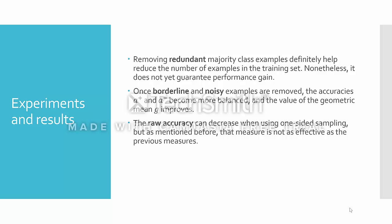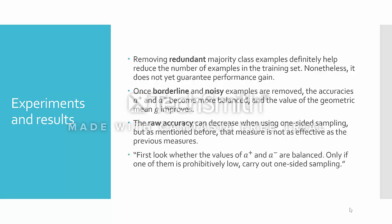Finally, as a rule of thumb: when wanting to use one-sided selection, first look at whether the values of A-plus and A-minus are balanced. Only if one of them is prohibitively low should you carry out one-sided sampling.